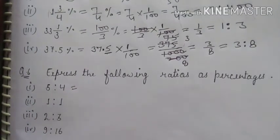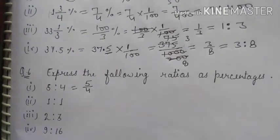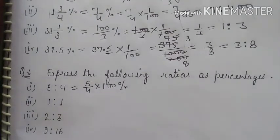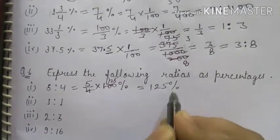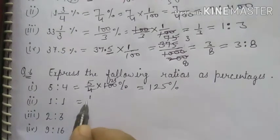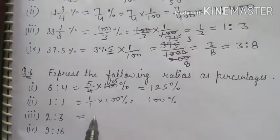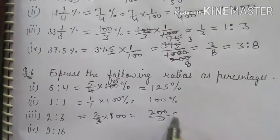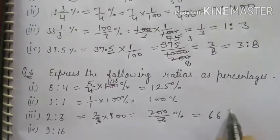Question 6: Express the following ratios as percentages. First, 5 is to 4: write as 5 upon 4, multiply by 100 percent — 100÷4 = 25, and 25×5 = 125%. Second, 1 is to 1: multiply by 100 percent gives 100%. Third, 2 is to 3: write as 2 upon 3, multiply by 100 percent gives 200 upon 3 percent, or 66⅔% as a mixed fraction.